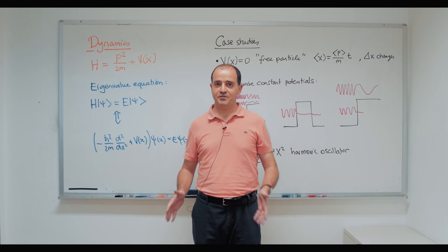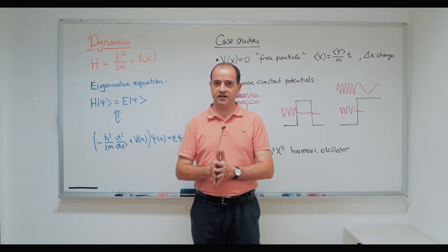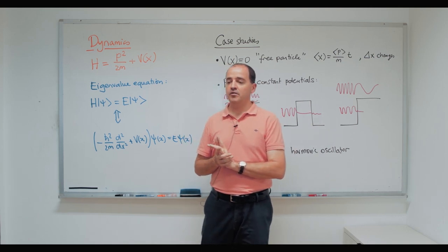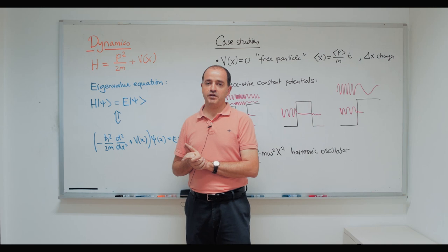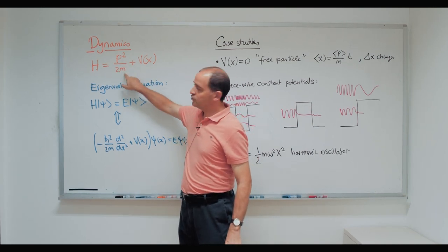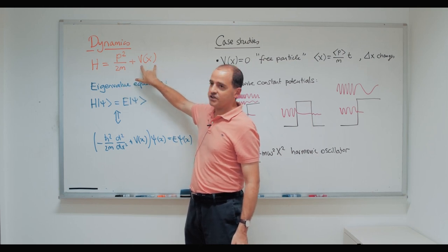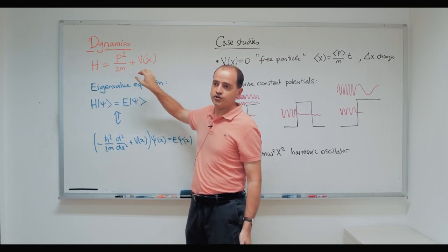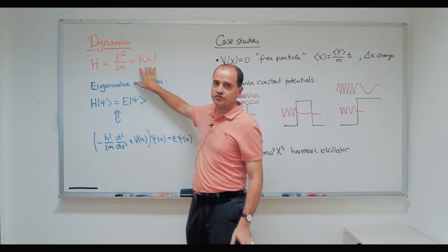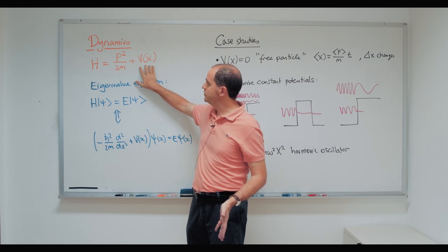Just as we did for chapter three, we have the description of the states, the description of the operators, and then next we have to check the dynamics — the evolution in time. For material points, the form of the Hamiltonian is fixed: it is p²/2m — kinetic energy — plus a potential energy that depends only on position. The different case studies we're going to see are case studies where this potential function varies.